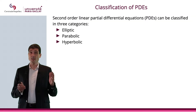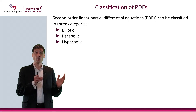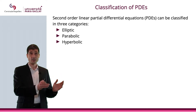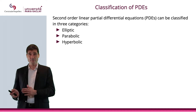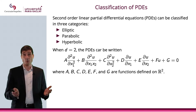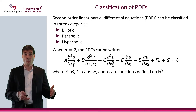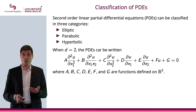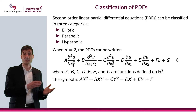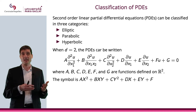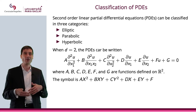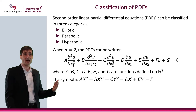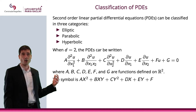Now, considering d equal to 2, we're going to look at second-order linear partial differential equations. These can be classified as either elliptic, parabolic, or hyperbolic. In dimension 2, a second-order linear PDE will always have a certain form, and the corresponding symbol will be Ax₁² + Bx₁x₂ + Cx₂² + Dx₁ + Ey + F — you can also write this as AX² + BXY + CY² + DX + EY + F.